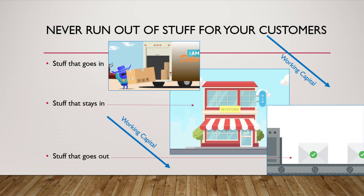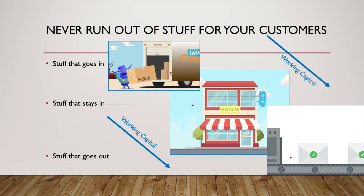Now, all we have to do to figure out how much money we need to make money is take just a little bit from every dollar that we get back for stuff that goes out, and take that money and put it back for the stuff that goes in and stays in.